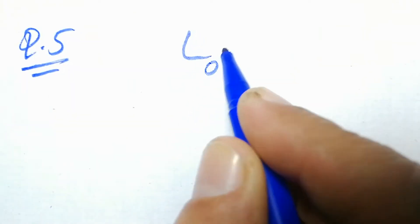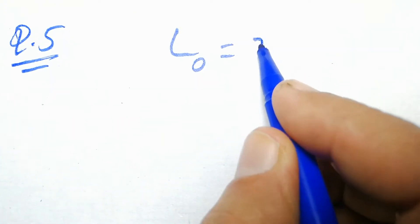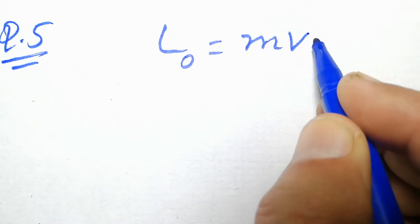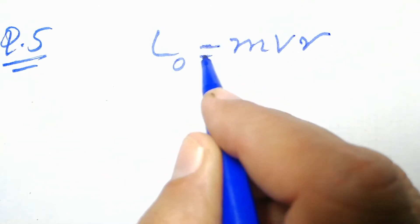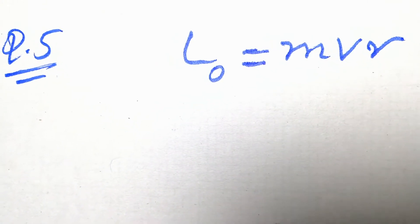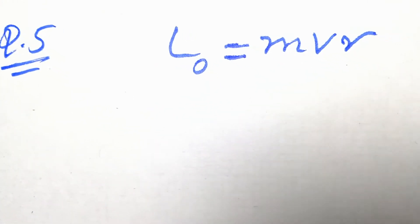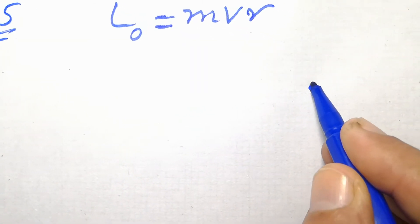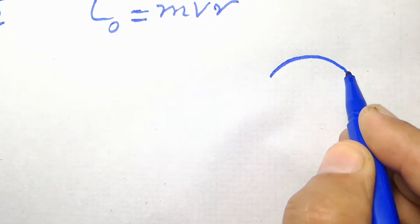Now we come to question number 5. The statement is: show that the orbital angular momentum L₀ is equal to MVR. We have to prove that orbital angular momentum is equal to MVR.